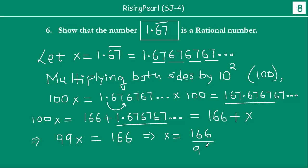Now this is clearly of the form P by Q, where both P and Q are integers. P is 166, Q is 99, and Q is not equal to 0. So this we know is the definition of rational number.